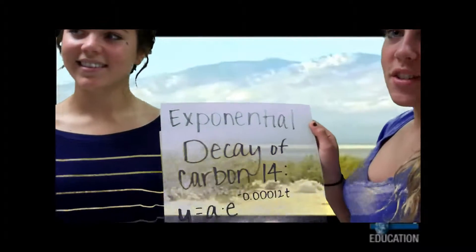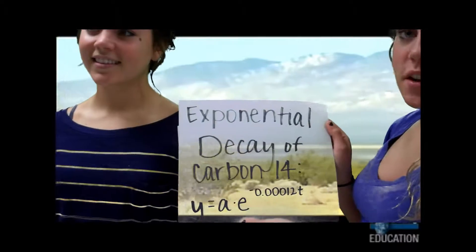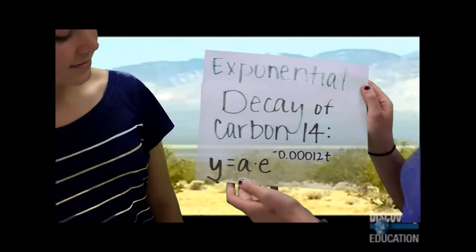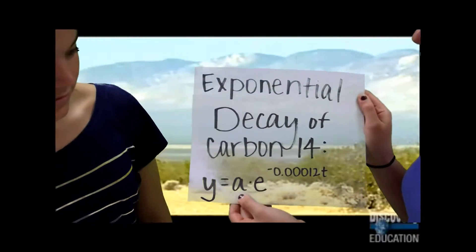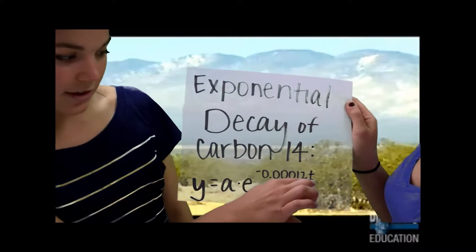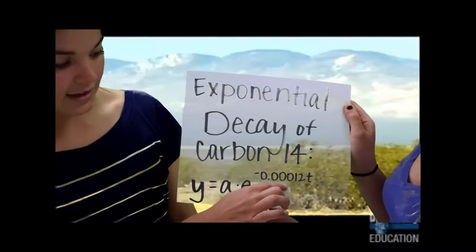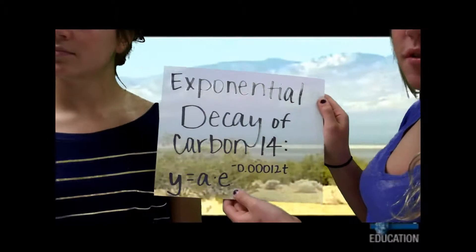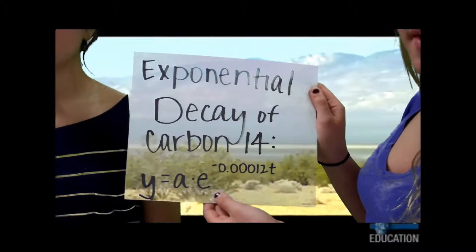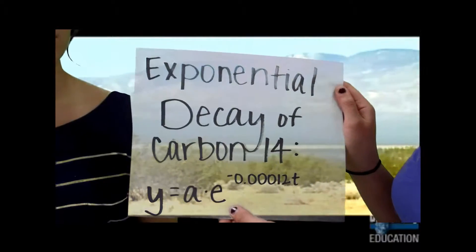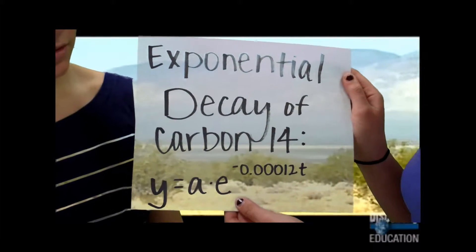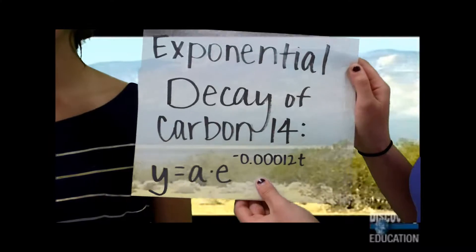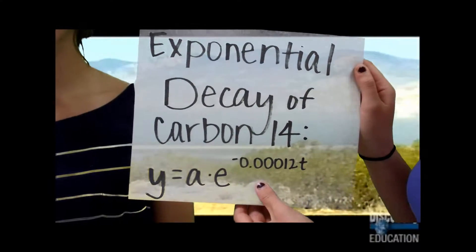The exponential decay formula here will be used to determine the age of our femur. A equals the initial value, T is the time in years, and K is the rate of decay. E is an irrational value approximately equaling 2.71, and Y equaling E to a power models exponential decay.